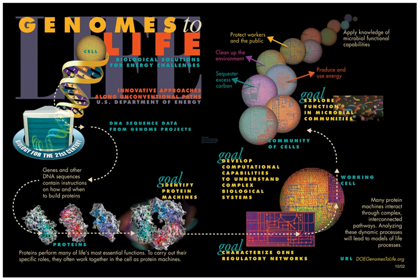Since the objective is a model of the interactions in a system, the experimental techniques that most suit systems biology are those that are system-wide and attempt to be as complete as possible. Therefore, transcriptomics, metabolomics, proteomics and high-throughput techniques are used to collect quantitative data for the construction and validation of models. The focus on dynamics is the main conceptual difference between systems biology and bioinformatics.